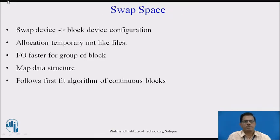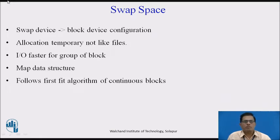First we will see allocation of swap space. The swap device is a block device in a configurable section of a disk. Whereas the kernel allocates space for files one block at a time, it allocates space on the swap device in a group of contiguous blocks. Space allocated for files is used statically, while allocation of swap space is transitory depending on the pattern of process scheduling. A process that resides on the swap device will eventually migrate back to main memory, freeing the space it had occupied. The system maintains free space for the swap device in an in-core table called a map.